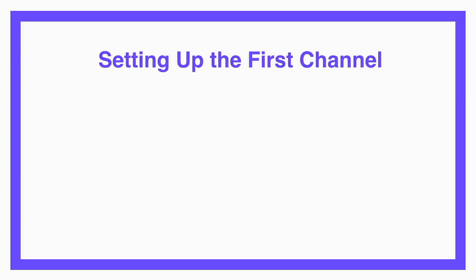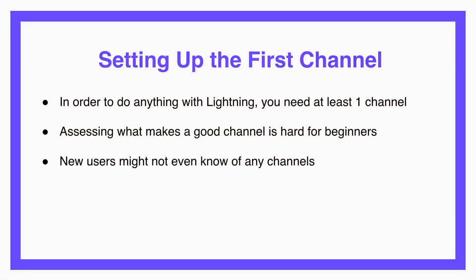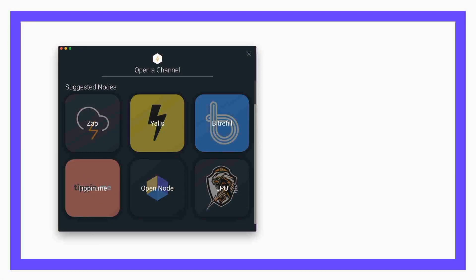Once a user has synced, the first thing they have to do is set up a channel. Your node isn't really a node until you have a channel — you're not on the graph, you're just floating in space. But that's really hard for people new to Lightning. They don't know how to assess what makes a good channel, they don't know about liquidity and peers. If you're coming from BitRefill or YALS, you probably want to connect to their node first. But some people don't have that starting point. Picking this first channel is extremely important because when you only have one channel, you're 100% reliant on that node.